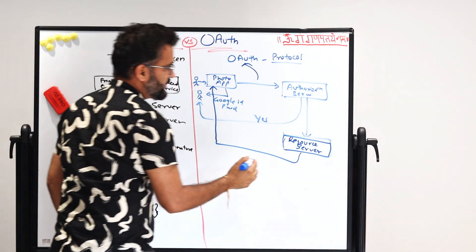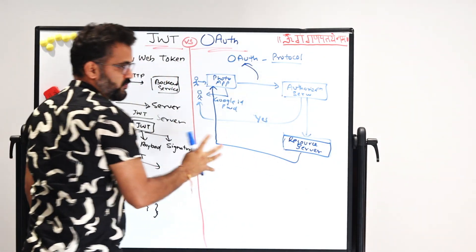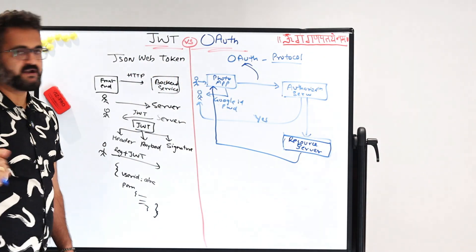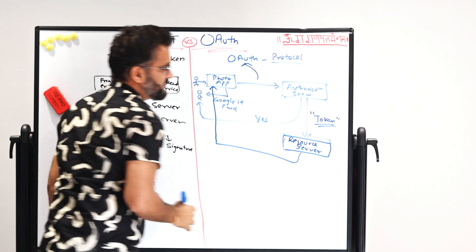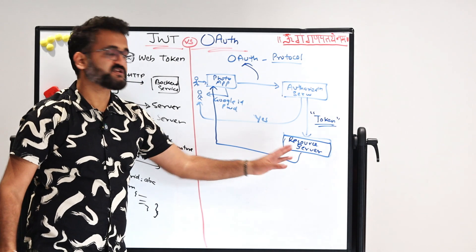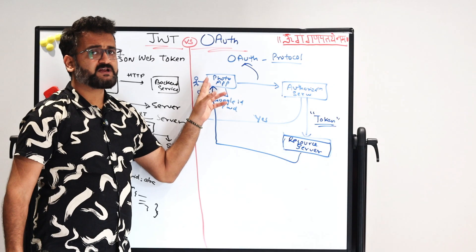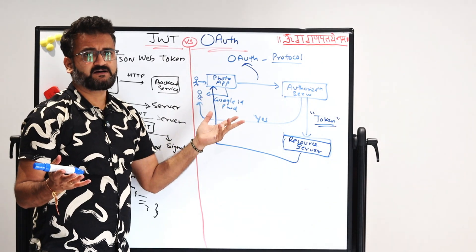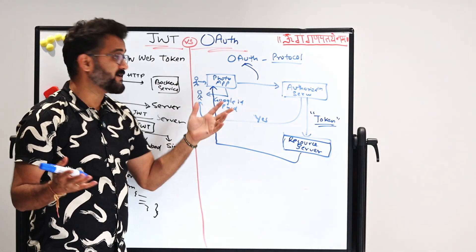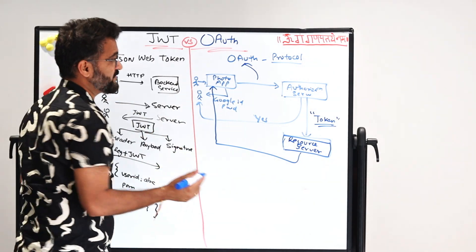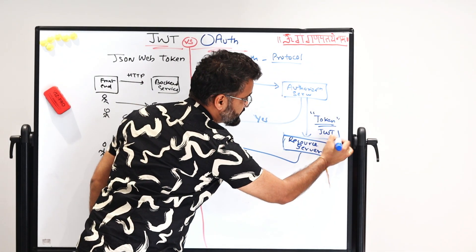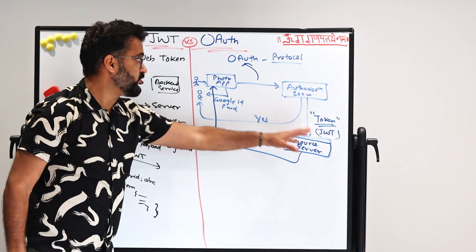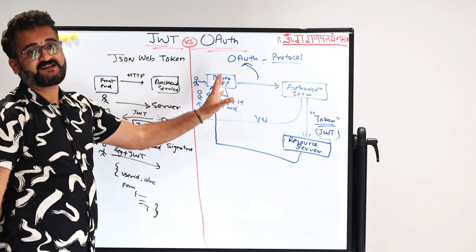In this whole flow, there is a point where the authorization server gives a token, and that particular token is given to the resource server. The photo app server does not immediately understand what that token is. But generally, this token can in most cases be a JSON Web Token, and this JSON Web Token will then be sent.